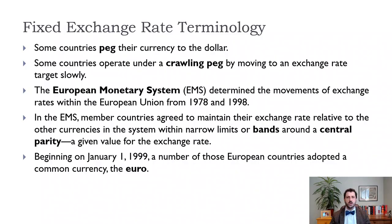First, let's talk a little bit of terminology. A peg is basically a fixed exchange rate to another currency, usually the dollar, but not always. And a crawling peg is where you have an exchange rate that moves very slowly toward an exchange rate target.